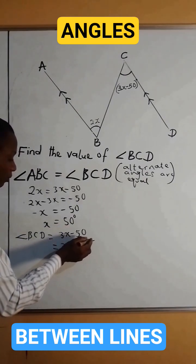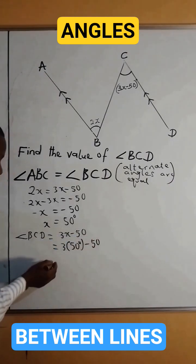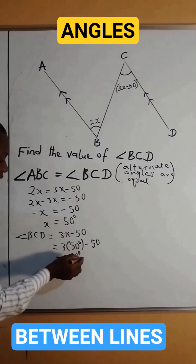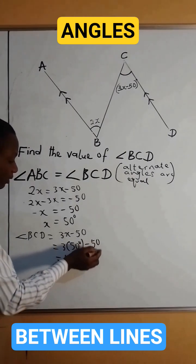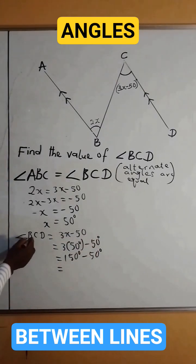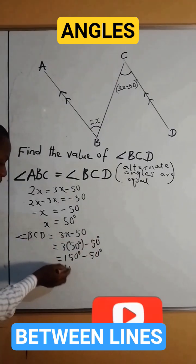3 times 50 is 150 degrees, then minus 50 degrees. Therefore, angle BCD equals 100 degrees.